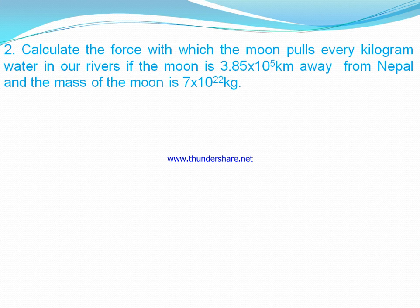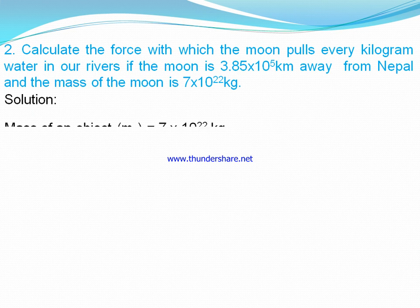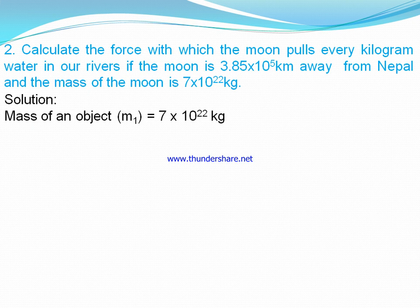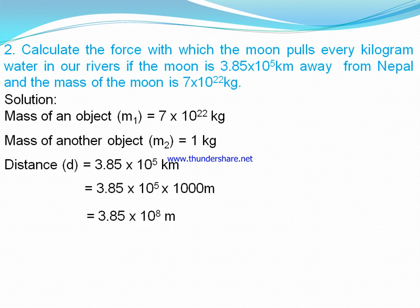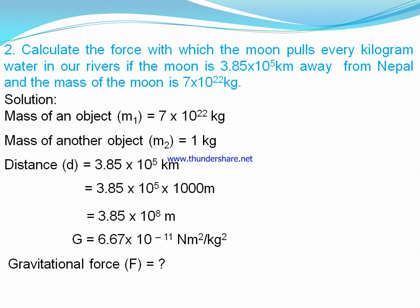Moving to the next numerical: calculate the force with which the moon pulls every kilogram of water in our rivers, if the moon is a given distance in kilometers away from Nepal and the mass of the moon is given. There are two masses: mass of moon m1 = 7 × 10²² kg, and mass of water m2 = 1 kg. The distance between them is 3.85 × 10⁵ km. Since distance must always be in meters, converting gives 3.85 × 10⁸ m. We also note the value of capital G.